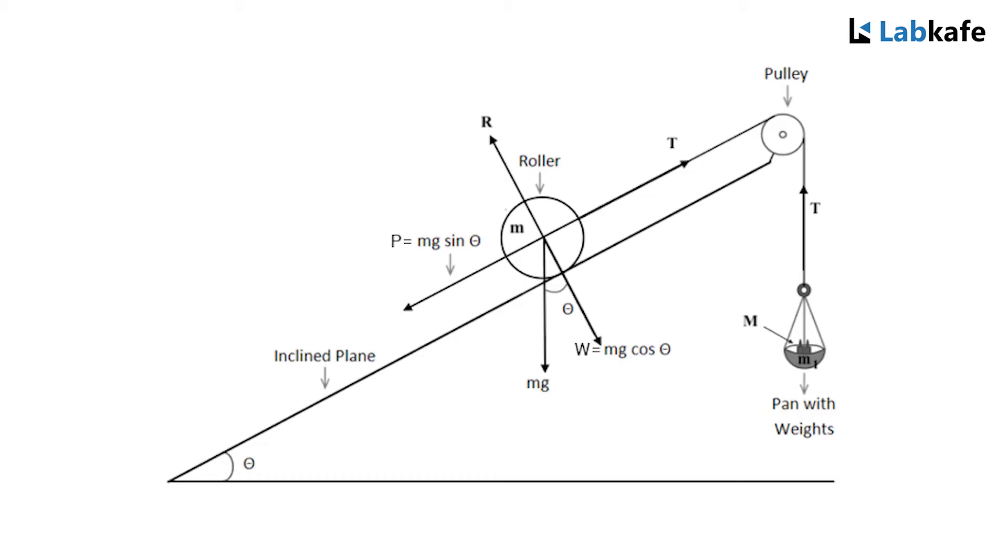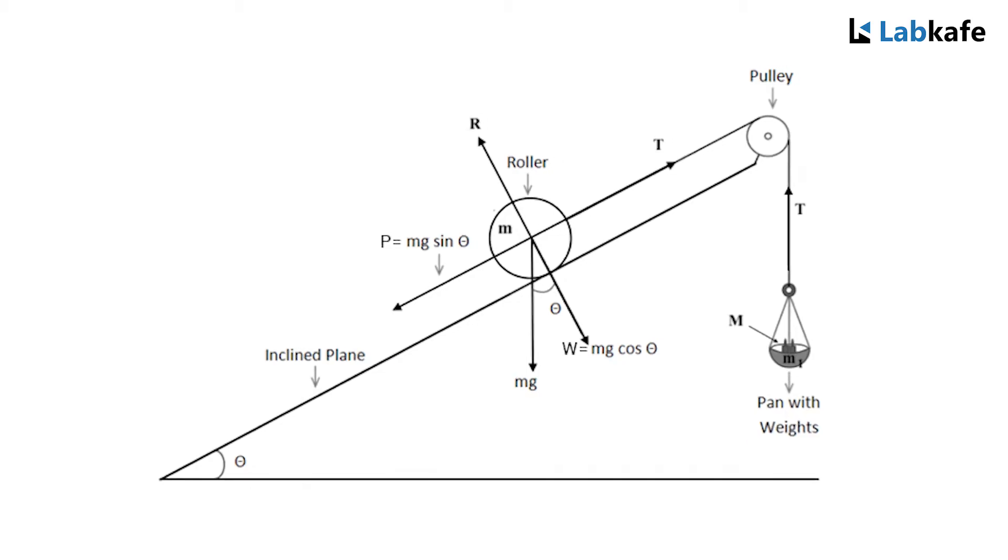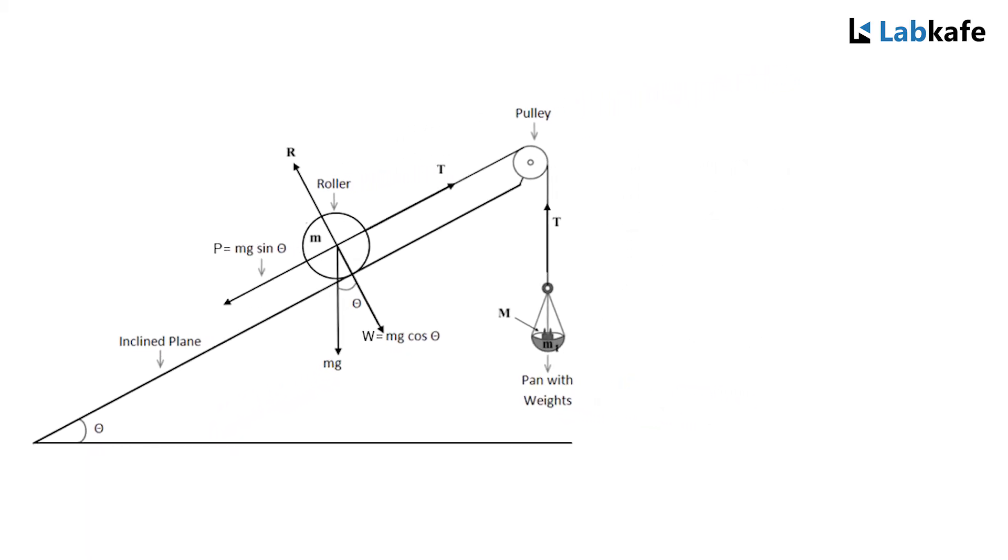The other component mg sine theta acts parallel to the inclined plane downwards, which produces motion in the roller due to gravitational force. If T is the force applied to the roller upward parallel to the inclined plane, then just to keep the roller in equilibrium, T has to be equal to mg sine theta. Hence for constant mass, T is proportional to sine theta.